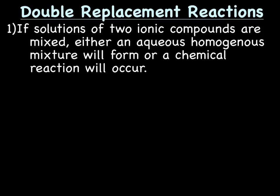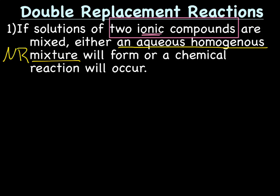Let's talk about that sentence a little bit. First of all, what's really important is for double replacement reactions to occur, it needs to be two ionic compounds. If you have an ionic and a covalent compound, or two covalent compounds, the reaction is likely going to be a synthesis reaction. And then you can either have an aqueous homogeneous solution, or mixture. What that means is you've got ions floating around in the water. So that basically means no reaction. Or, you'll get a chemical reaction. You'll form a solid, a liquid, or a gas.